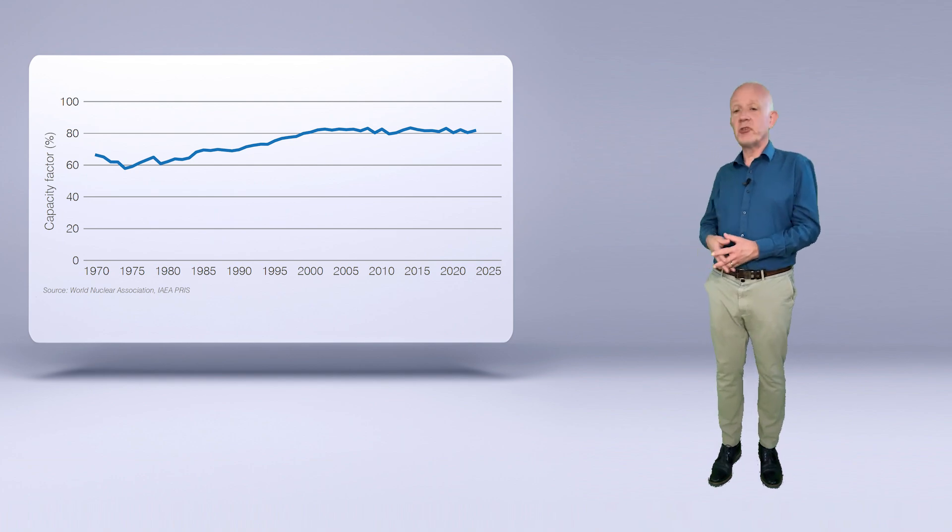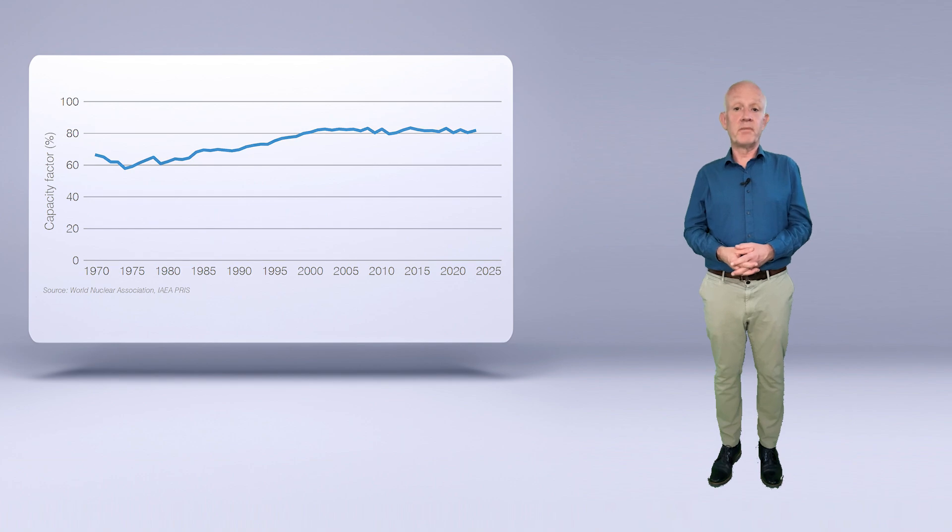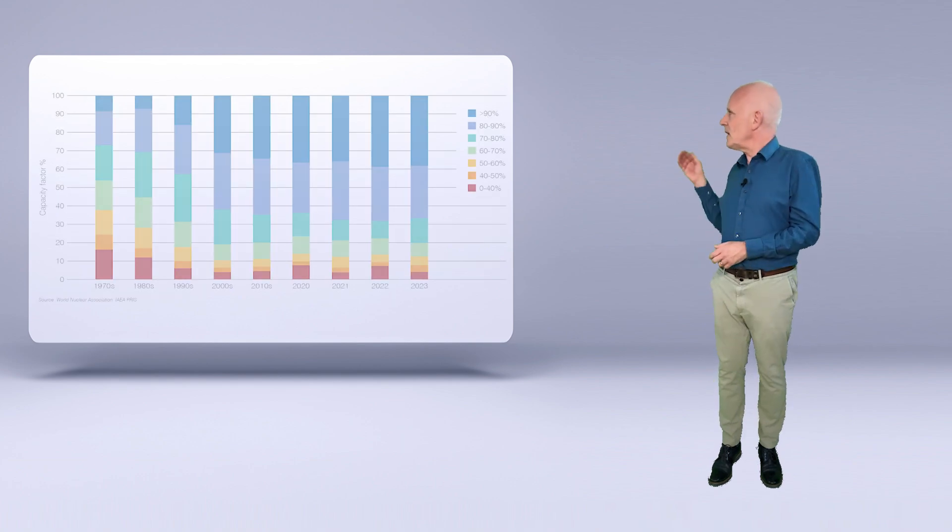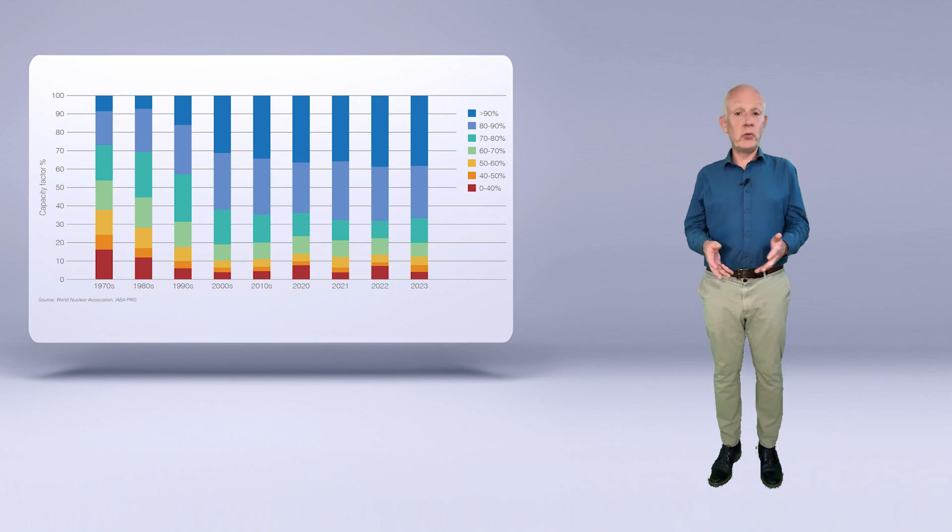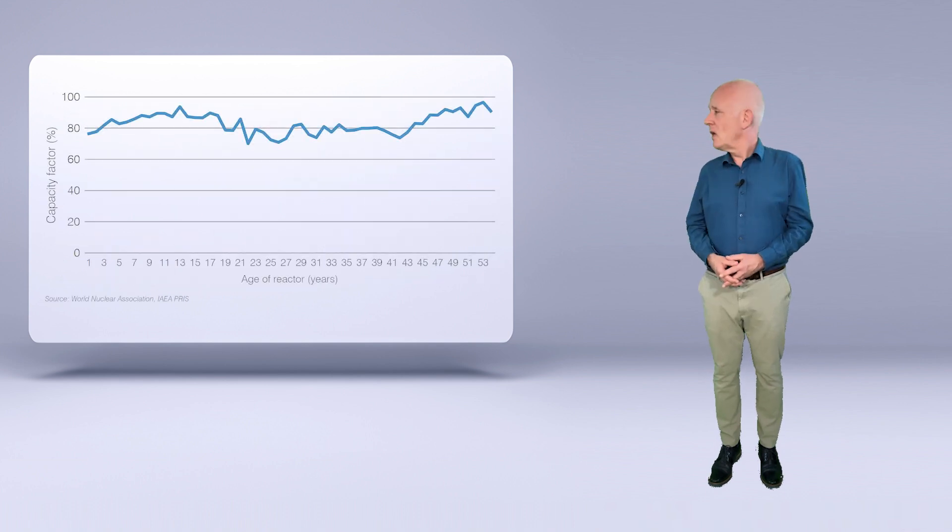This continues the trend seen since 2000. There was a steady improvement in average capacity factors from each decade, from the 1970s through the 1980s and 1990s, with high capacity factors being achieved since the 2000s. It is important to note that this is a global improvement across all reactors, from those built in the 1970s through to those built more recently.